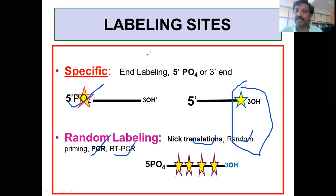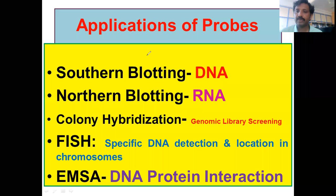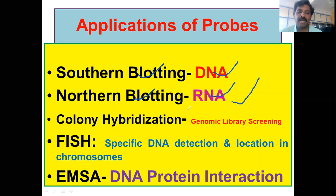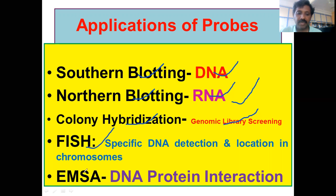The prepared labeled probes are used in most hybridization techniques. They are used in southern blotting to detect the DNA molecule, in northern blotting to detect and quantify RNA, and in colony hybridization to screen genomic libraries. They are also used in FISH — fluorescent in situ hybridization — where you can detect the physical location of genes in the chromosomes. The last application is EMSA, where DNA or RNA and protein interactions can be detected and quantified. These are the applications of the probes.